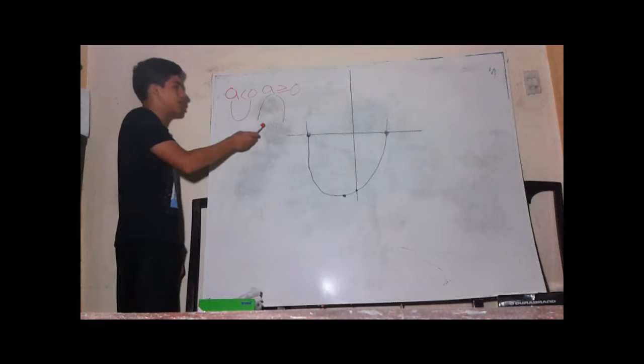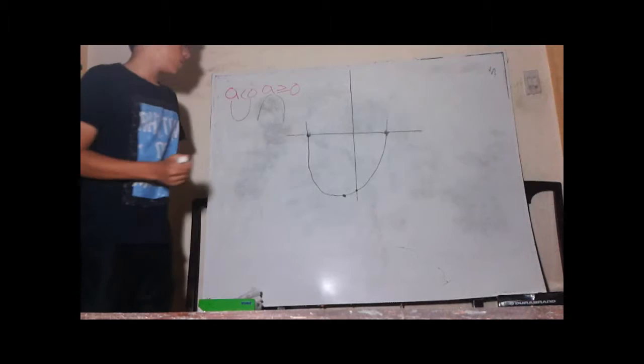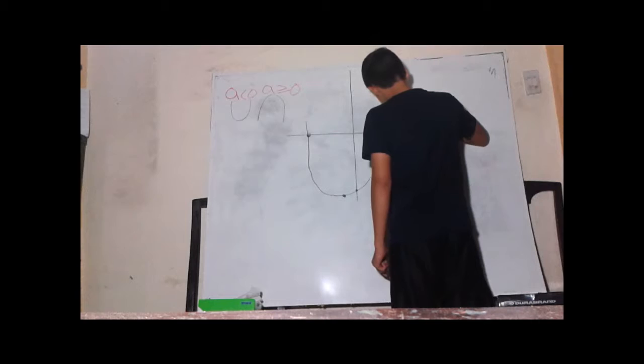The graph can open upward when a is less than zero, or open downward when a is greater than or equal to zero. Here we have these two points that are the x-intercepts.